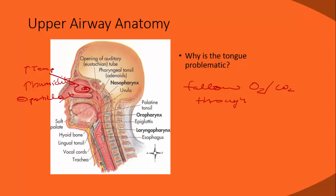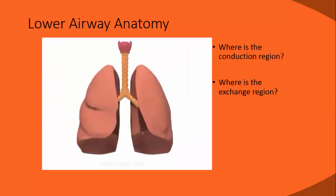The tongue is a huge muscle that, when a person is supine, falls back and occludes the airway — resulting in a snoring sound. You are expected to know all of the structures of the upper airway. The lower airway is simpler in structure. The dividing point between upper and lower airway is the larynx, where the vocal cords are located.